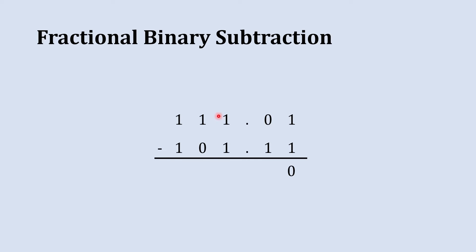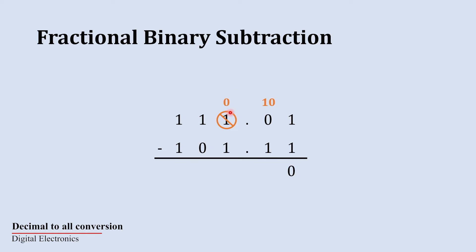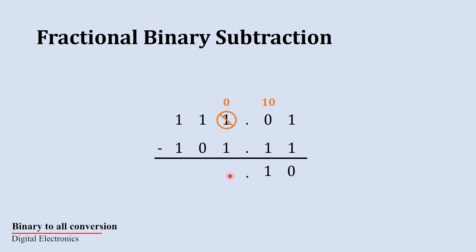When we borrow 1 from the integer column to the fractional column it becomes 1 0 at that position, and 0 is left in the column we borrowed from. Now we subtract this 1 from 1 0, giving us 1. We place the binary point as it is.